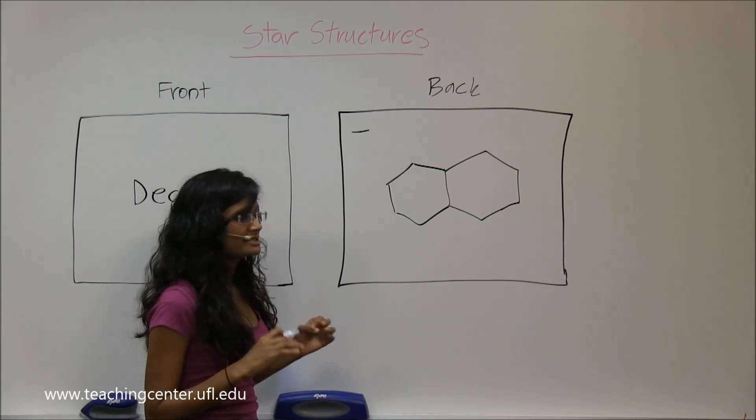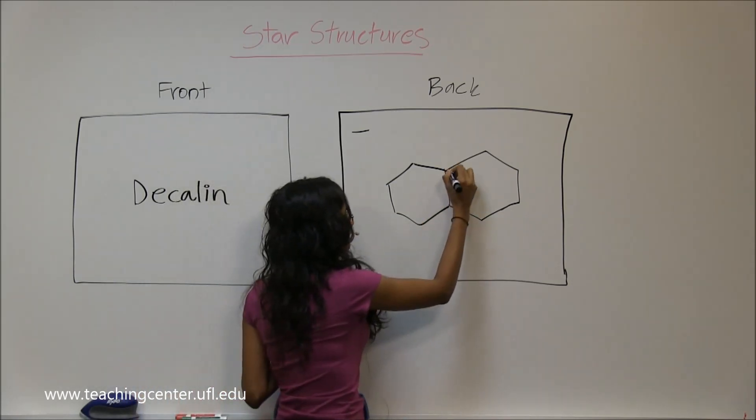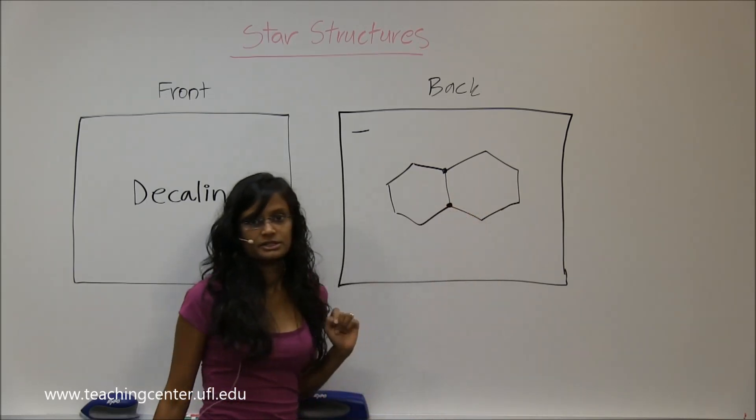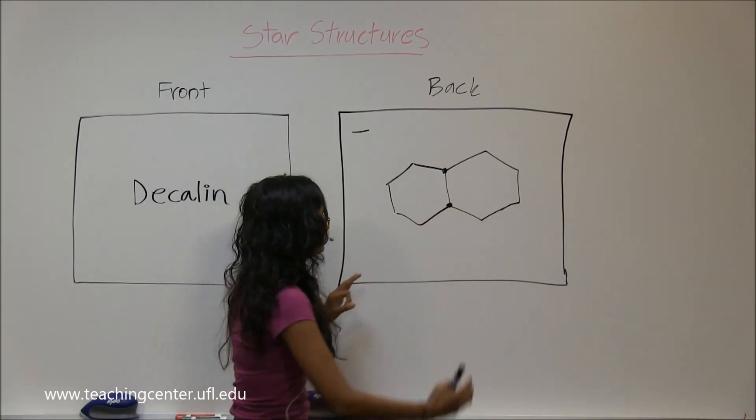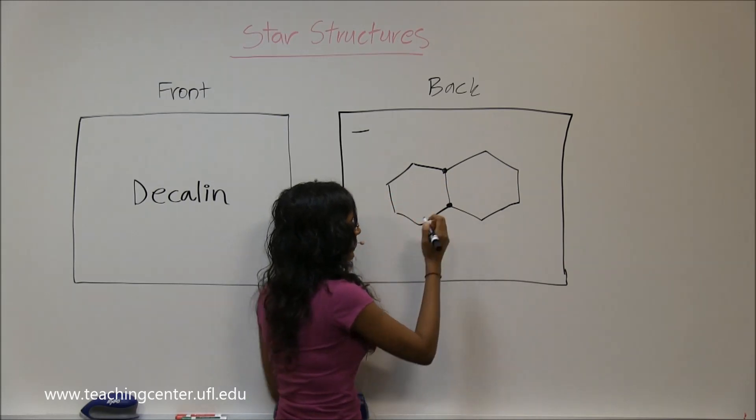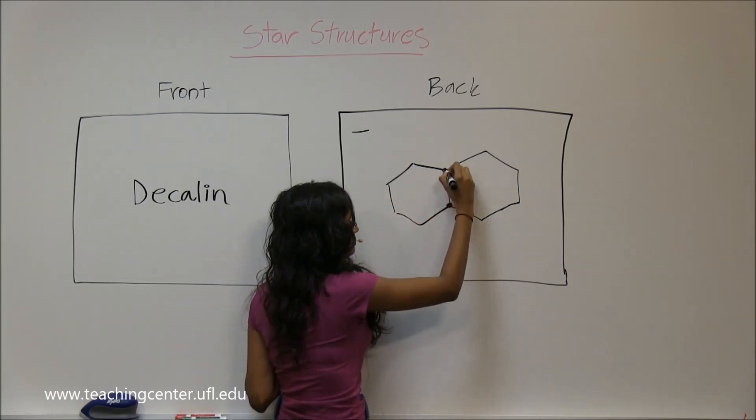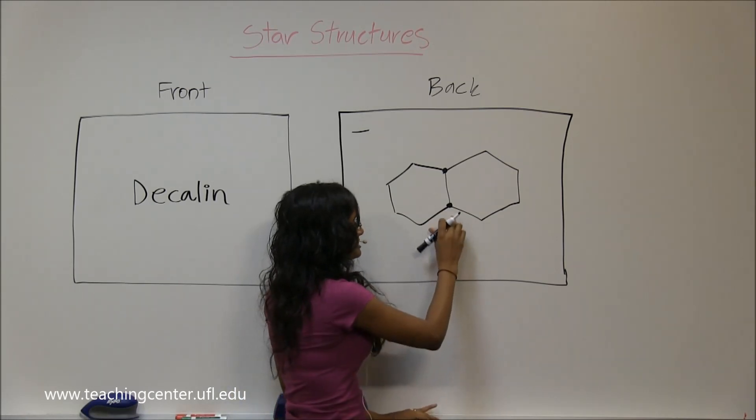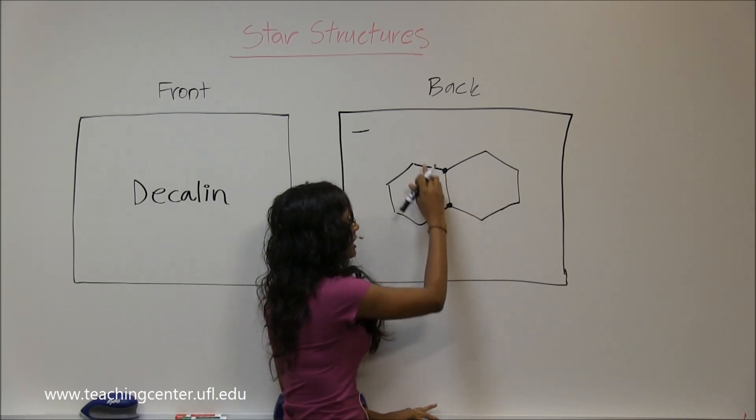Wherever it's attached, those are called the bridge head carbons. So you have two different rings and these two bridge head carbons are adjoining them.